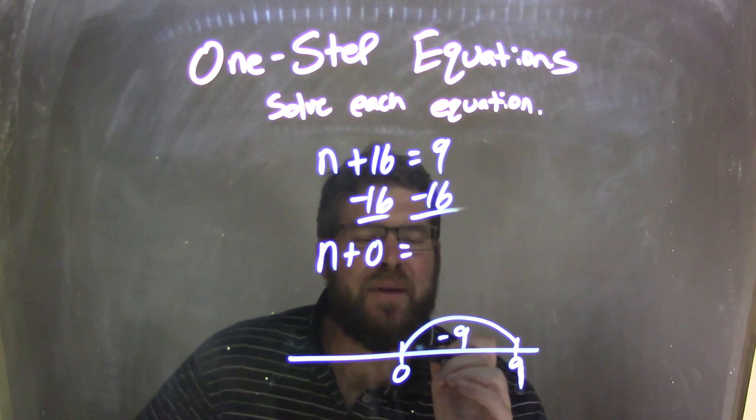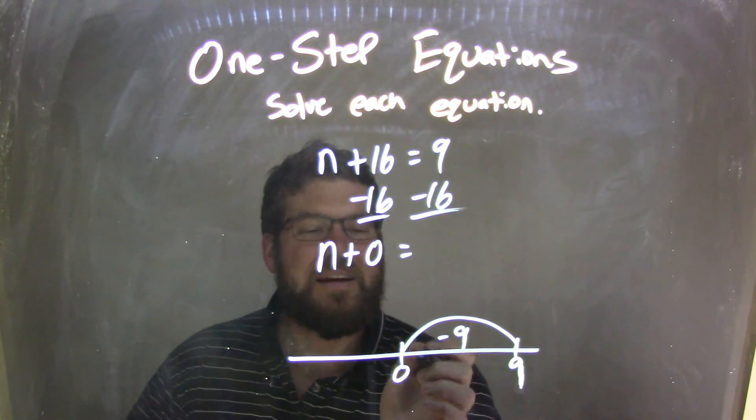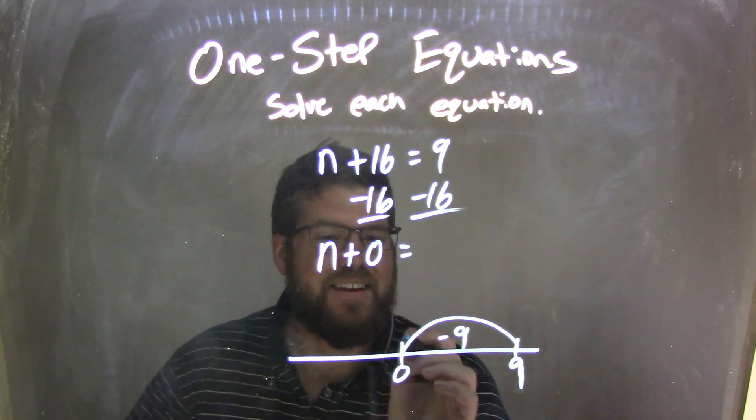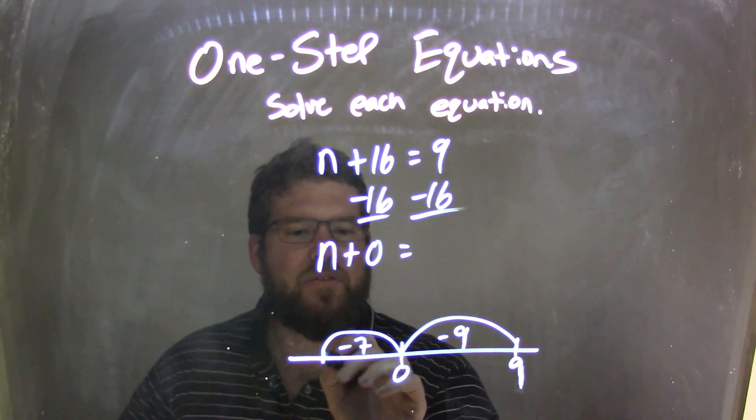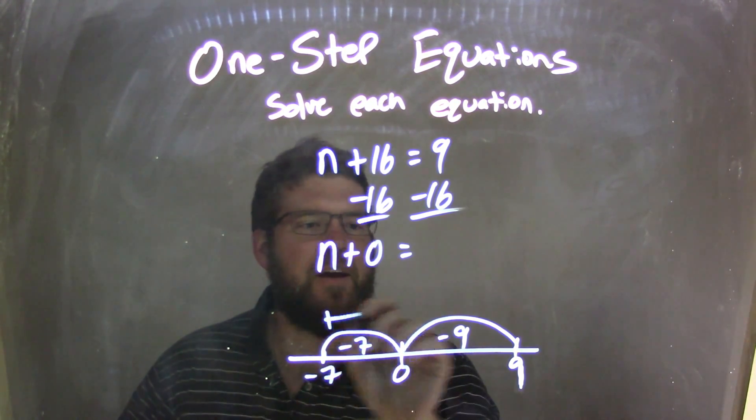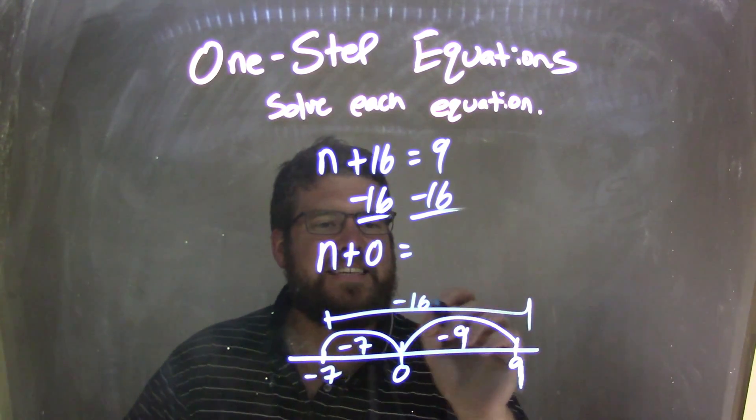If I subtract 9, I get to 0, but I have to subtract some more to get to 16. Total subtracting 16, that'd be 7 more. So, minus 7 gets me a total here at negative 7 of a total subtraction of minus 16 units.